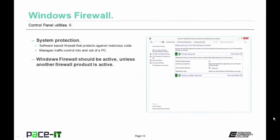Let's briefly discuss Windows Firewall — a utility for system protection. It's a software-based firewall that protects against malicious code by controlling traffic into and out of a PC. Windows Firewall should be active unless another firewall product is present and active.